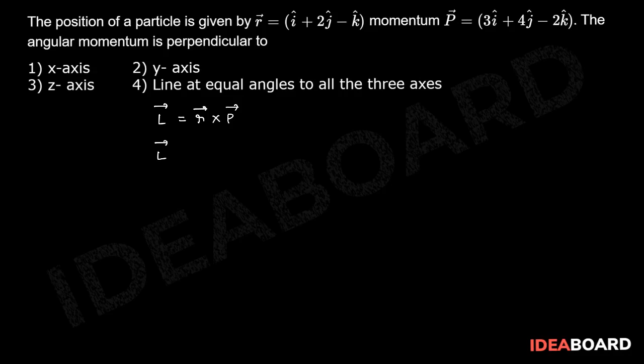Thereby l bar is equal to taking r cross p, take determinant i cap j cap k cap. Now the first row 1, 2, minus 1, p bar vector 3, 4, minus 2.